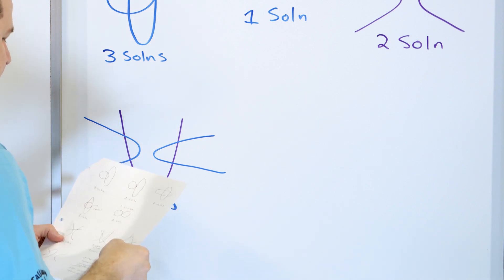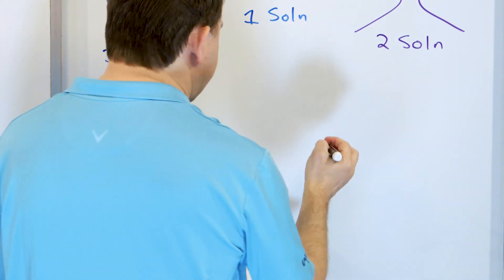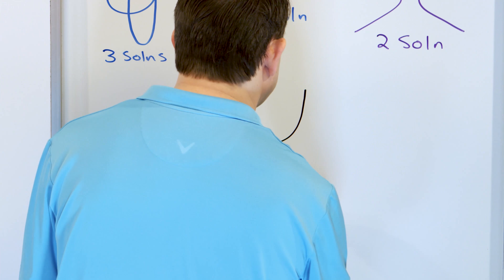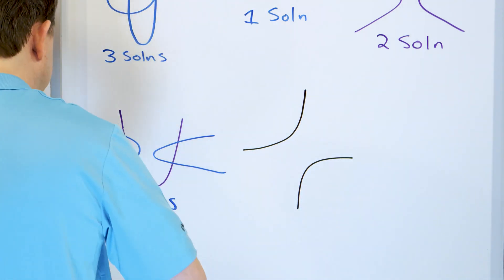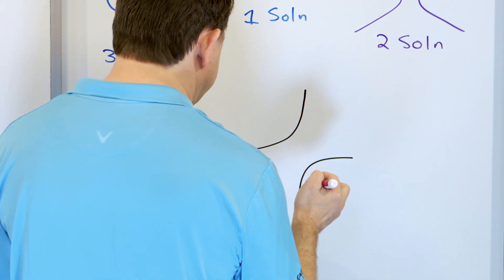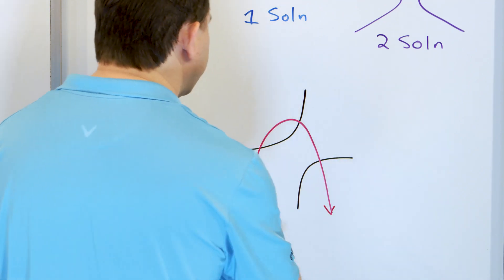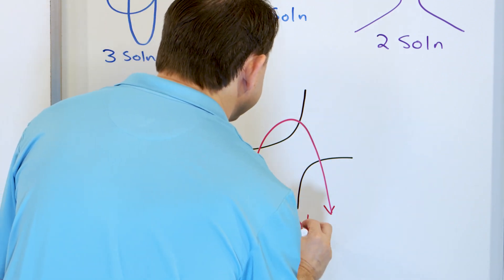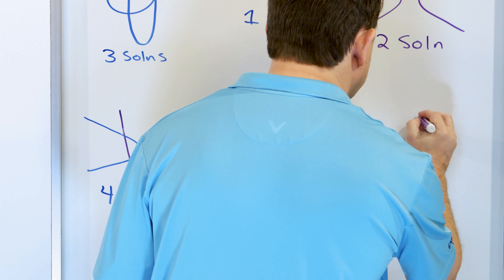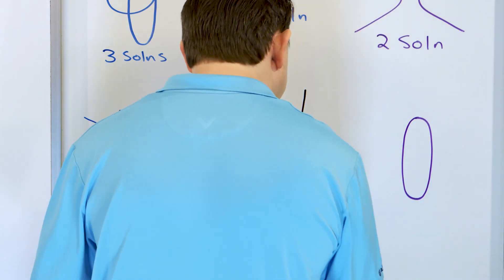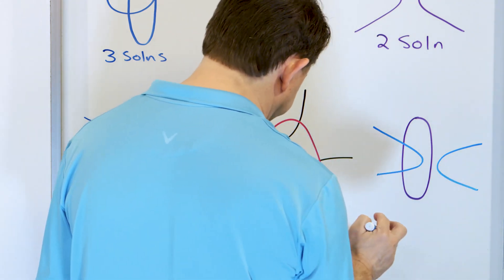A parabola and a hyperbola can also have three solutions. If I draw the hyperbola oriented differently — almost vertically — and draw a parabola coming down, they can cross in three locations: three solutions. And an ellipse paired with a hyperbola where only one branch of the hyperbola touches the ellipse gives two solutions.